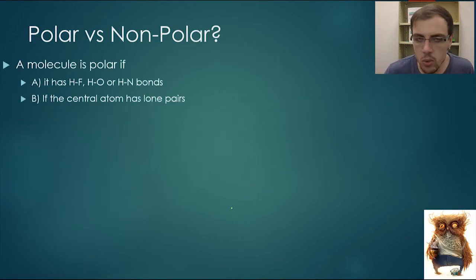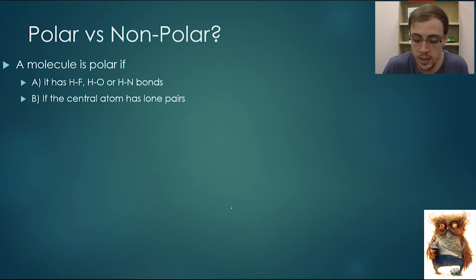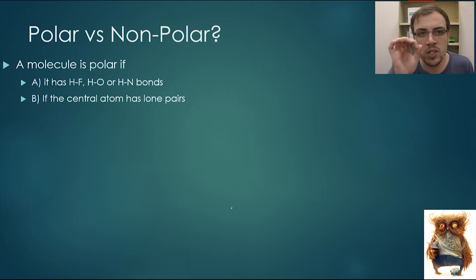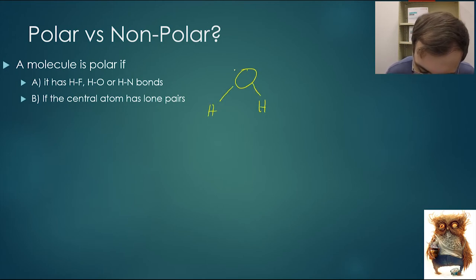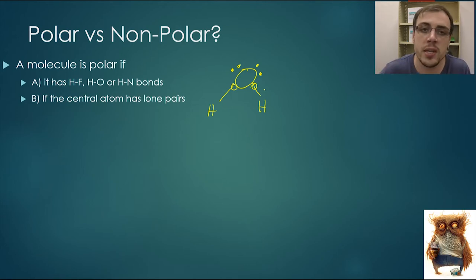Typically, a molecule will be polar if it has hydrogen connected to fluorine, oxygen, or nitrogen, mainly because these are among the most electronegative substances on the periodic table. Another thing to be aware of is if the central atom contains a lone pair of electrons. This is the example where water comes into play. When we looked at water, that oxygen atom has lone pairs of electrons — it has two lone pairs sitting up here because it only used two of its electrons in bonding. If a central atom contains lone pairs of electrons, there is a very, very good chance that it is polar.